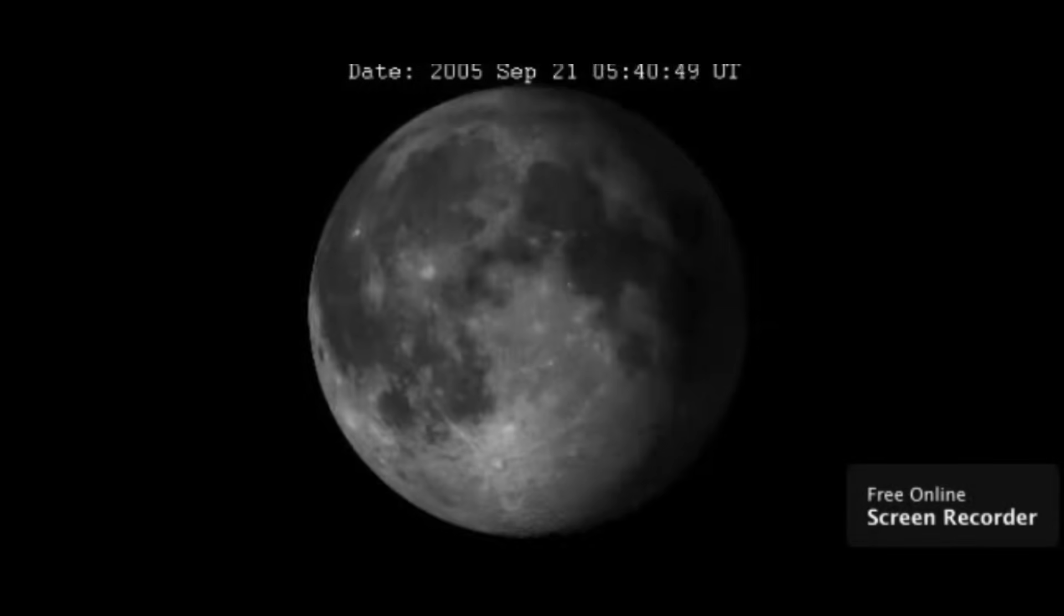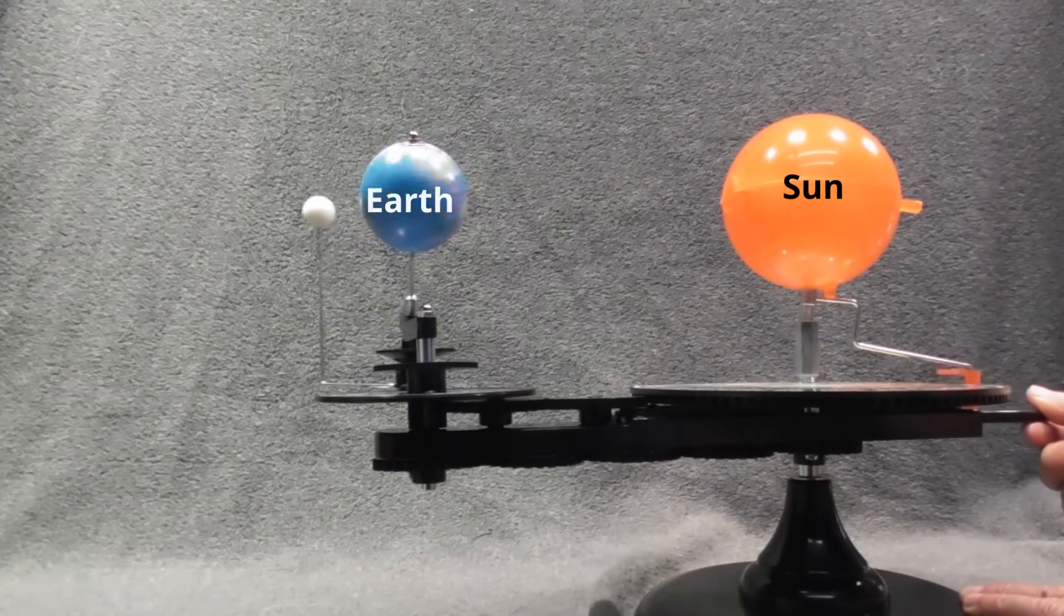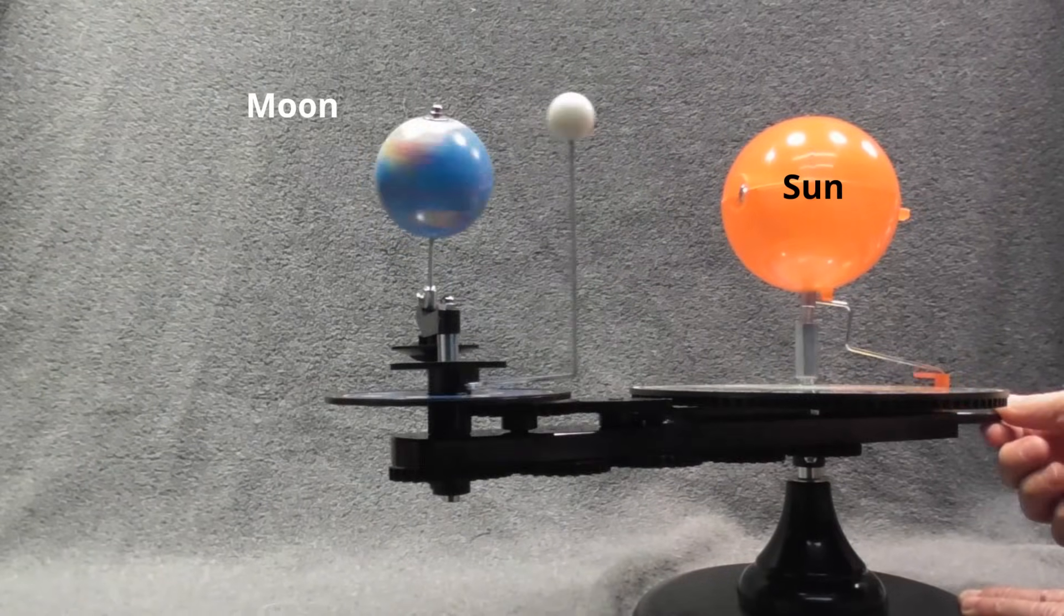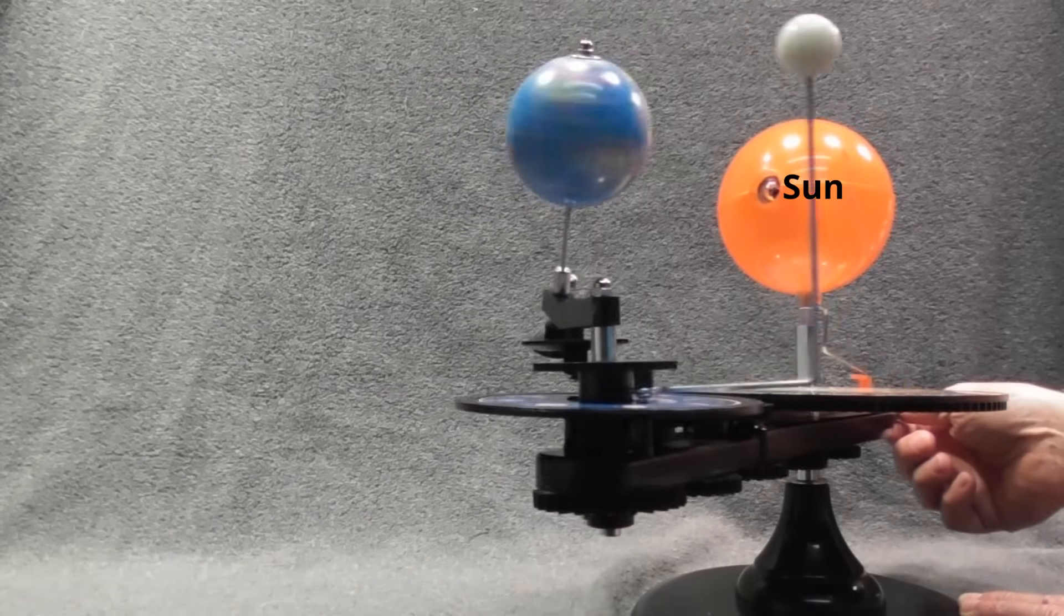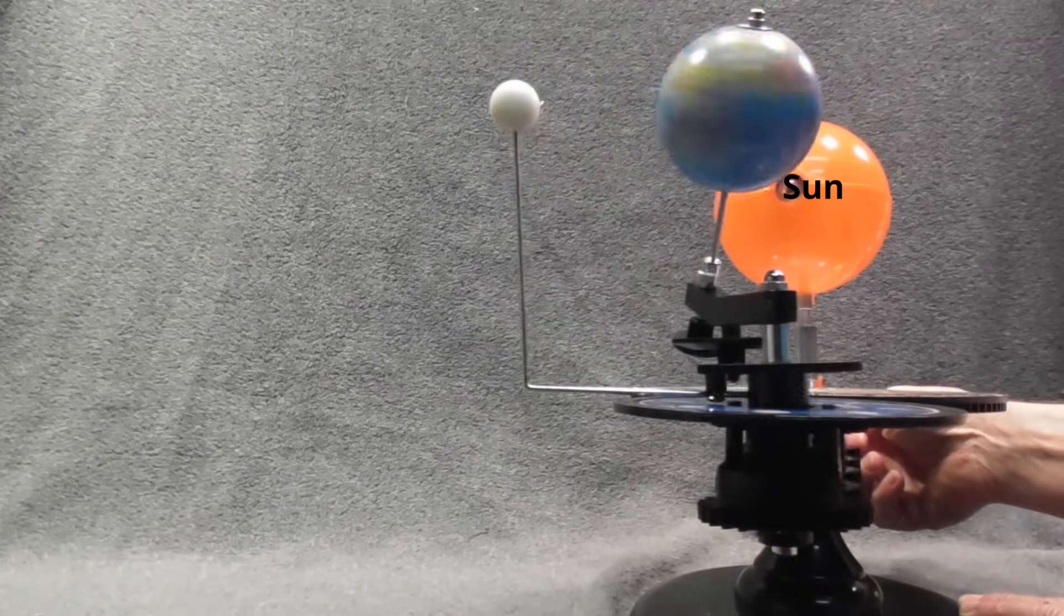But why does this happen? The sun, earth, and moon, along with their movements, causes the phases of the moon. The earth revolves around the sun and the moon revolves around the earth. Let's take a look at this.